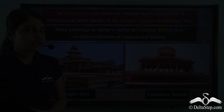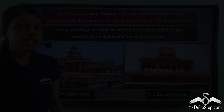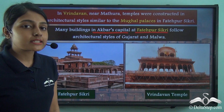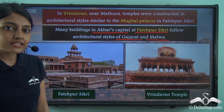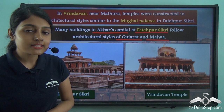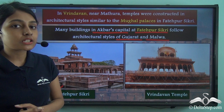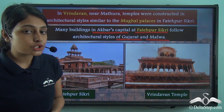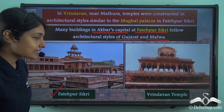Fatehpur Sikri was the capital of Mughal Emperor Akbar, and he built many palaces there. Many of these buildings at Fatehpur Sikri also followed the architectural styles of Gujarat and Malwa. So the temples in Vrindavan were influenced by the palaces at Fatehpur Sikri, which were in turn influenced by Gujarat and Malwa — showing how ideas were shared across various regions.